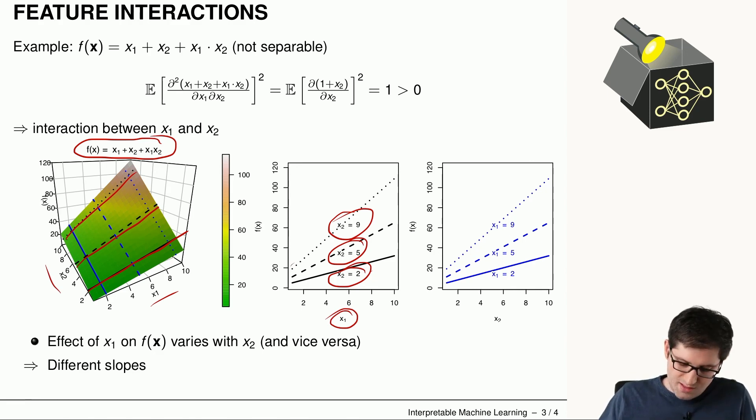As we can see, the lines here have usually a different slope, which means that the effect of x1 will depend on the value of x2, saying that we have interactions present here. The other way around is basically the same.